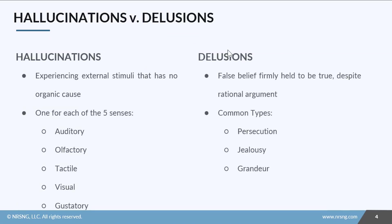Now we've talked about hallucinations and delusions a few times, so I really just want to clarify what they are and how each of them is managed. Hallucinations are when a patient experiences an external stimulus that has no organic cause — in other words, it's not really there. There is a type of hallucination for each one of the five senses, so there's auditory.